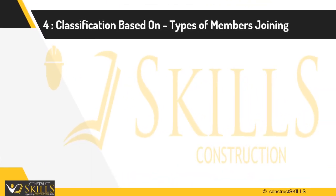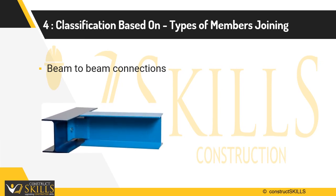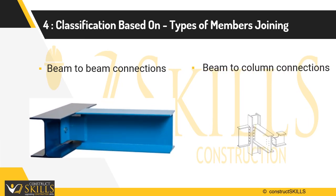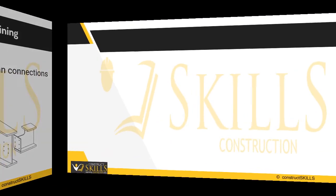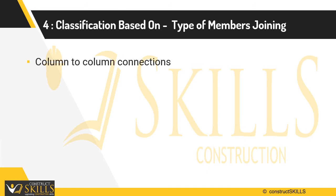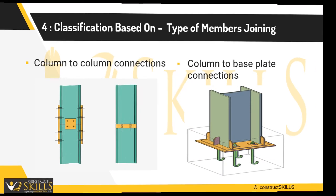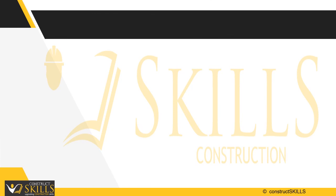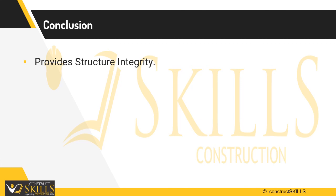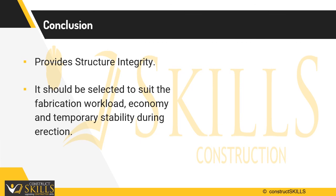Classification according to type of member: connecting columns and beams should be one of the primary considerations when designing a steel connection. The most common configurations include beam-to-beam connections and beam-to-column connections. Other types include column-to-column connections and column-to-base plate connections. After understanding these different types of connections, we can conclude that structural integrity is achieved through joints. The connection type should be selected to suit the fabrication workload, economy, and temporary stability during erection of a structural steel building.